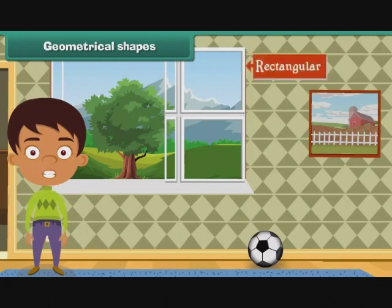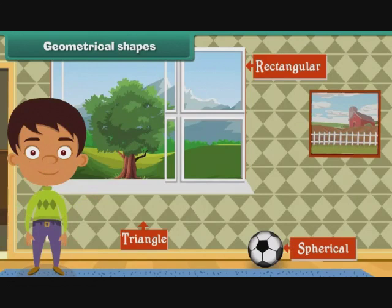It is rectangular in shape. The design on the tiles is triangle. Look at the ball lying in the room. Its shape is spherical. Now look at the frames of the painting hanging on the wall. It is square in shape. Now you have seen and learned different objects with different shapes.